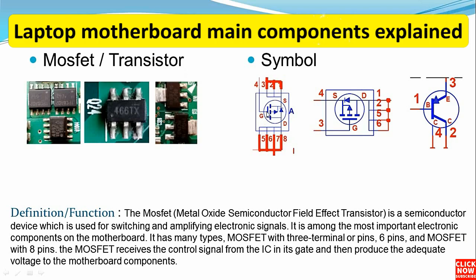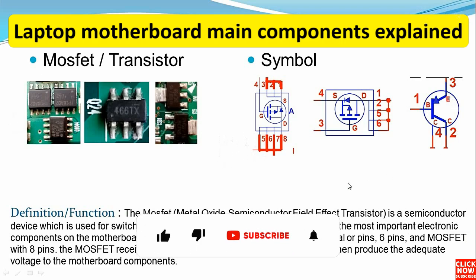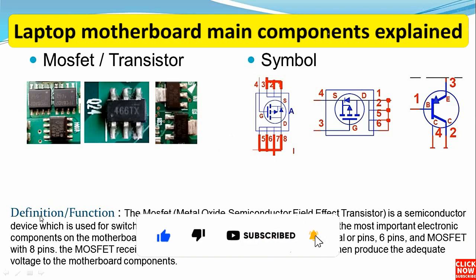Here we have some symbols. This symbol is for a MOSFET with eight pins or terminals: four pins for drain connected together, three pins connected together for source, and one pin for the gate. The first pin is always marked with a dot or a white mark and refers to the first pin of the source. So pins one, two, and three are for source; pin four is for gate; and pins five, six, seven, and eight are for drain. Here we also have a transistor with emitter, collector, and base. The transistor and the MOSFET are the same in principle.